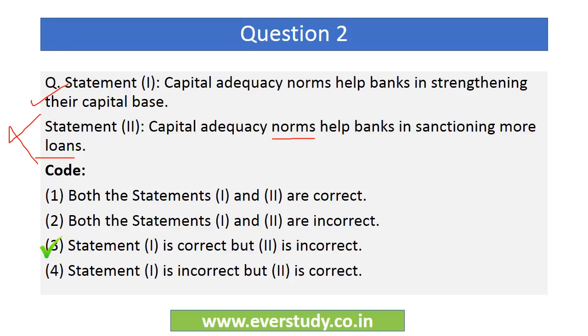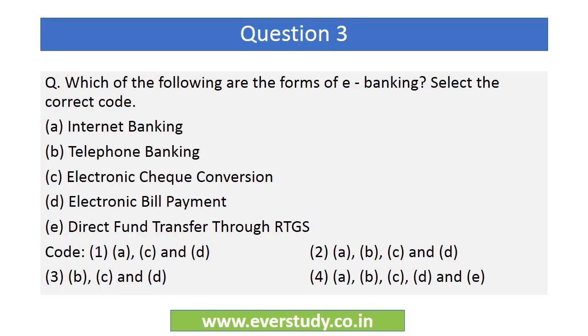Therefore, Statement 1 — that capital adequacy norms help banks strengthen their capital base — is correct. But Statement 2 — that these norms help banks give more loans — is incorrect, because these norms actually ensure banks do not give an excess amount of loans relative to their capital. The answer is option number three: Statement 1 is correct but Statement 2 is incorrect.